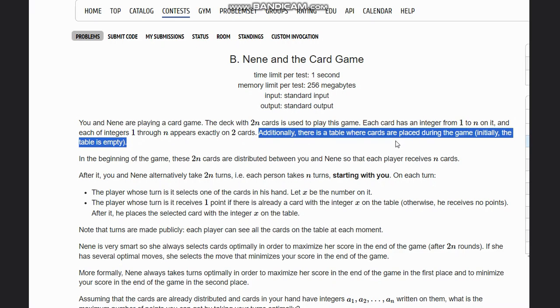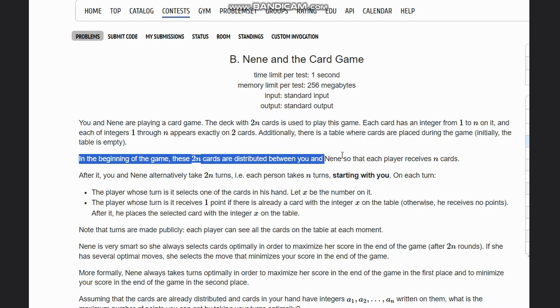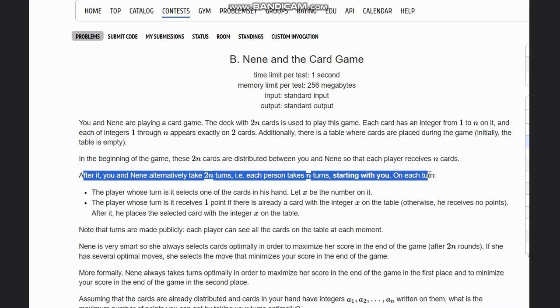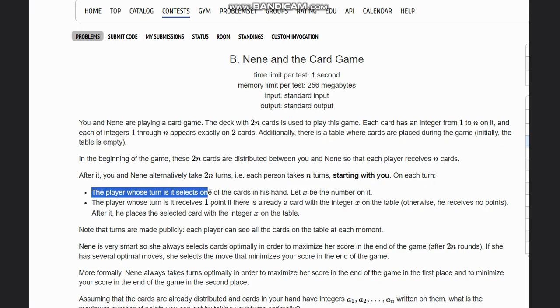Additionally, there is a table where cards are placed during the game. Initially the table is empty. In the beginning of the game, the two n cards are distributed between you and Neen so that each player receives n cards. After it, you and Neen alternatively take 2n turns, that is each person takes n turns starting with you.